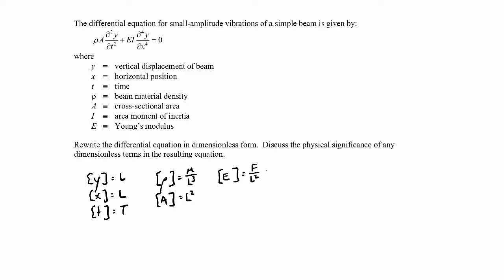E has the same dimensions as pressure, which in terms of mass, length, and time will be mass times length over time squared times one over length squared, so it'll be mass over length times time squared. Then the area moment of inertia I for the beam will be length to the fourth.